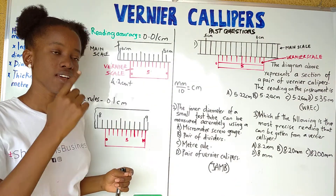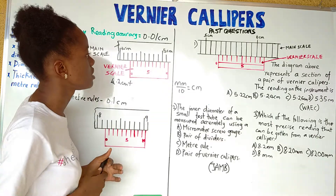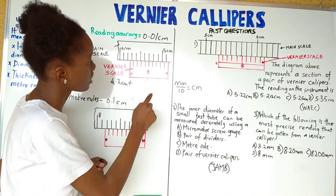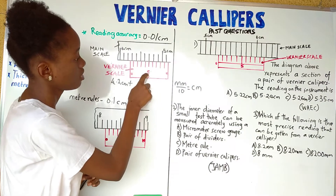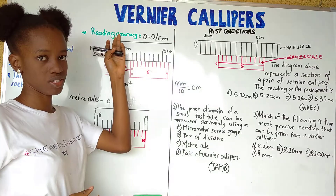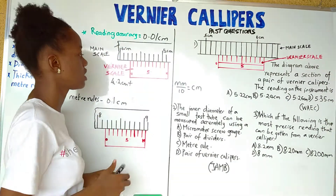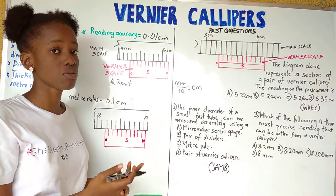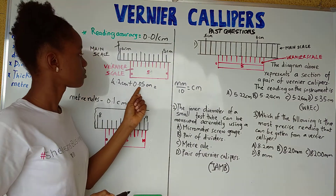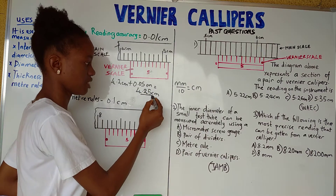On the vernier scale, we look for a line that meets with a line on the main scale. Looking through the lines — this doesn't meet, this doesn't, this doesn't, this doesn't — this one does. That's number 5, the fifth line. We take this value of 5 and multiply it by the reading accuracy: 5 times 0.01 gives us 0.05 centimeters. Adding that to 4.2 centimeters gives us 4.25 centimeters. That is our answer.